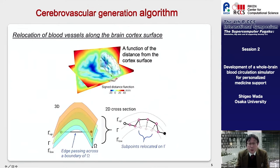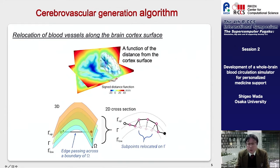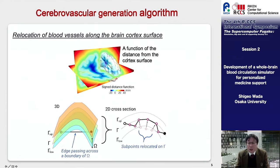Since blood vessels created by this algorithm follow straight lines, they pass through the inside of the cortex. We correct this location by using a distance function from the brain surface.